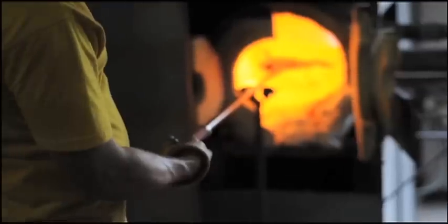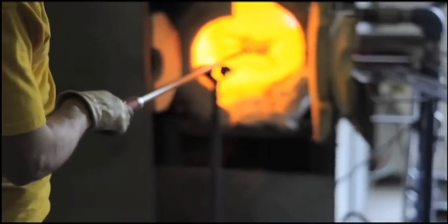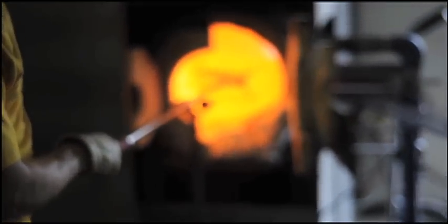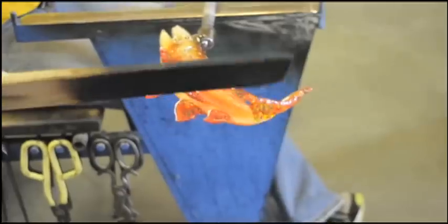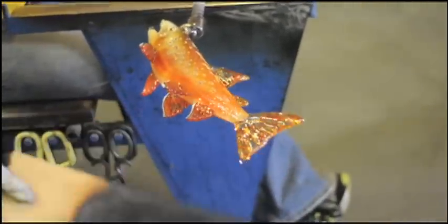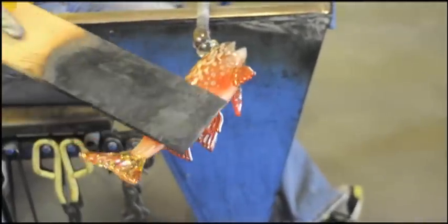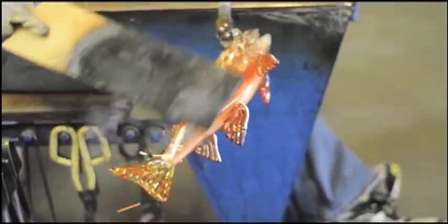Back in the glory hole to keep things warm. And back to the bench. Finish shaping it up. Using a wood paddle here to work out the final shape.